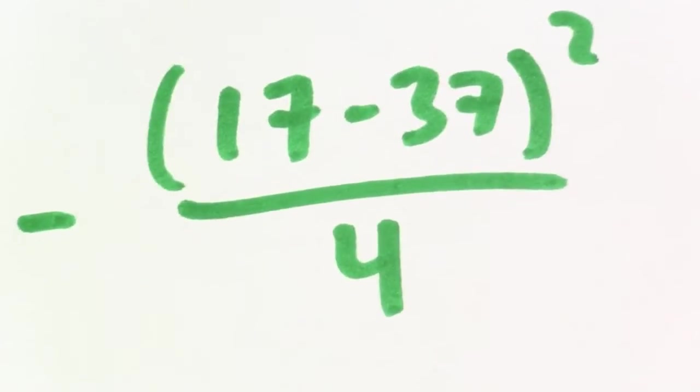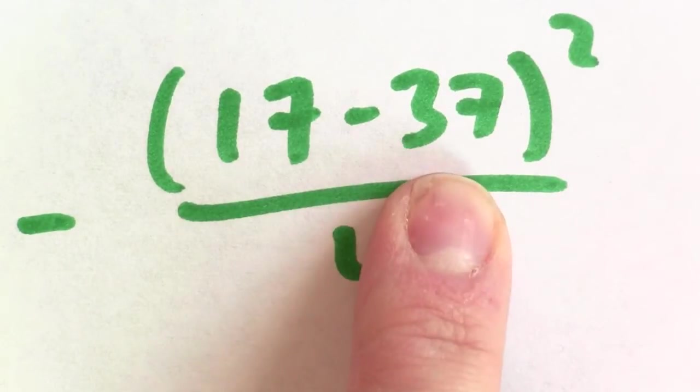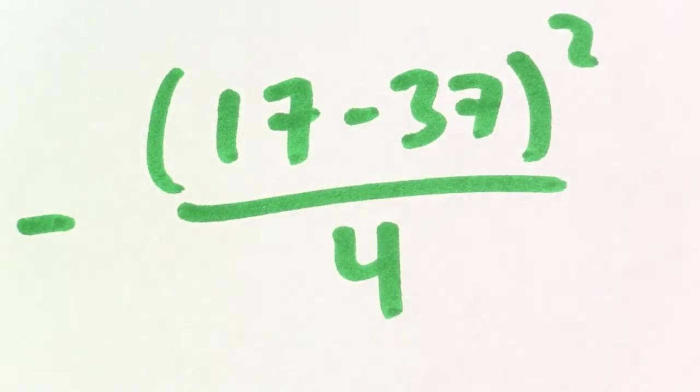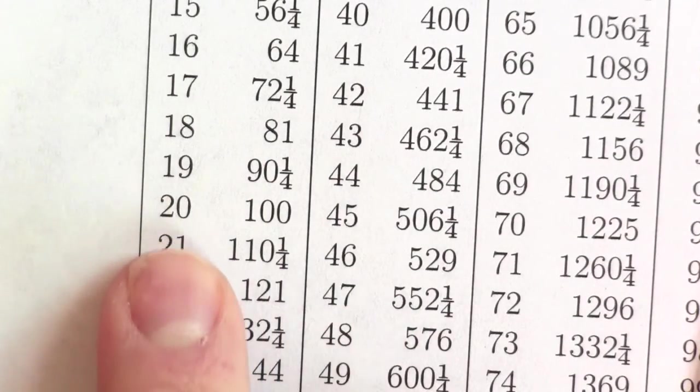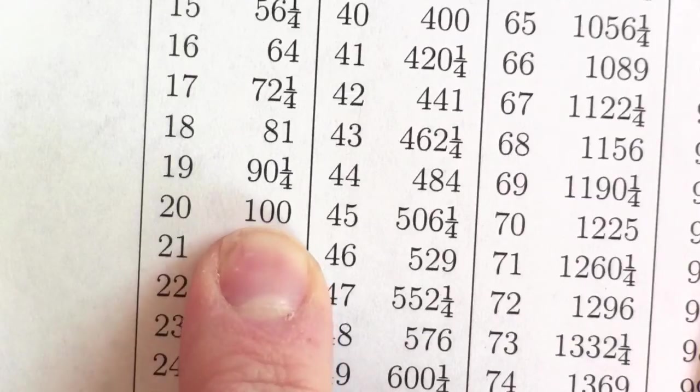Now, the next step is to look at the difference of 17 and 37, which is 20. And look that up in my table of quarter squares. Here's 20. And the quarter square of 20 is 100. That's pretty clear. 20 squared is 400 divided by 4. It's 100.